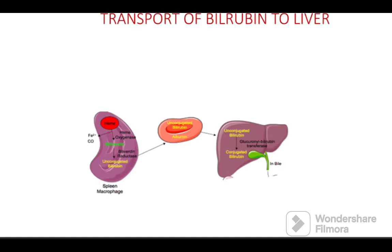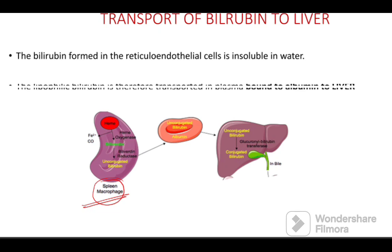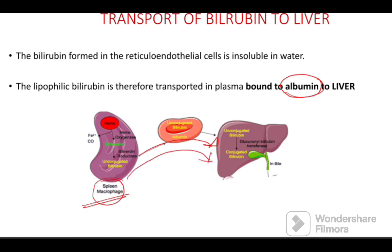Once bilirubin is produced in the macrophages of spleen, liver, and bone marrow, it is water insoluble and must be transported to the liver. This transport occurs with the help of the transporter albumin. Albumin binds to this unconjugated bilirubin and carries it from the spleen to the liver.